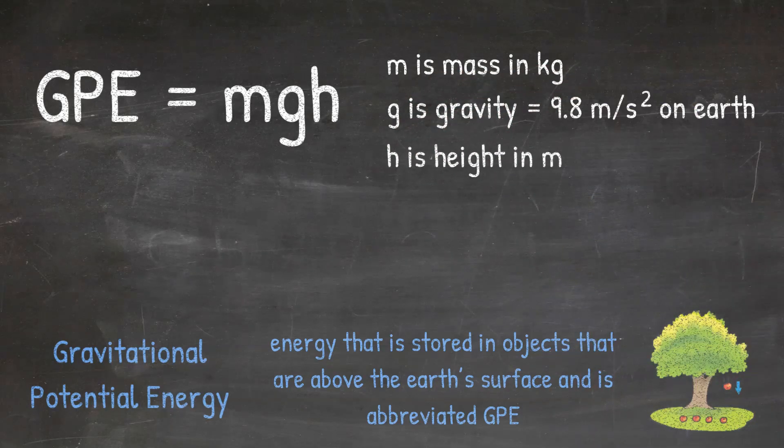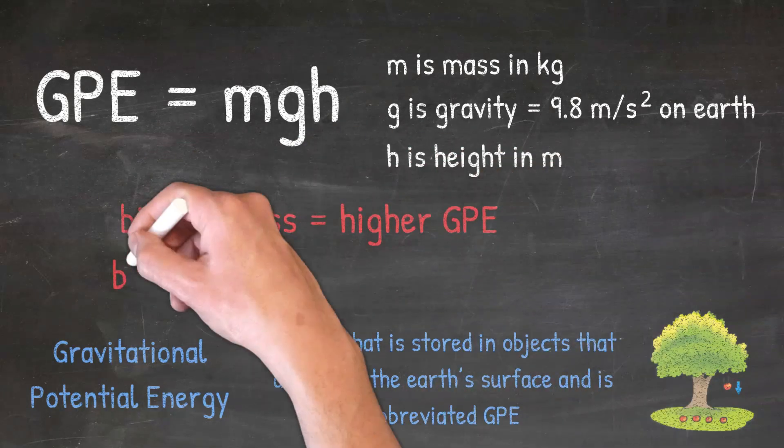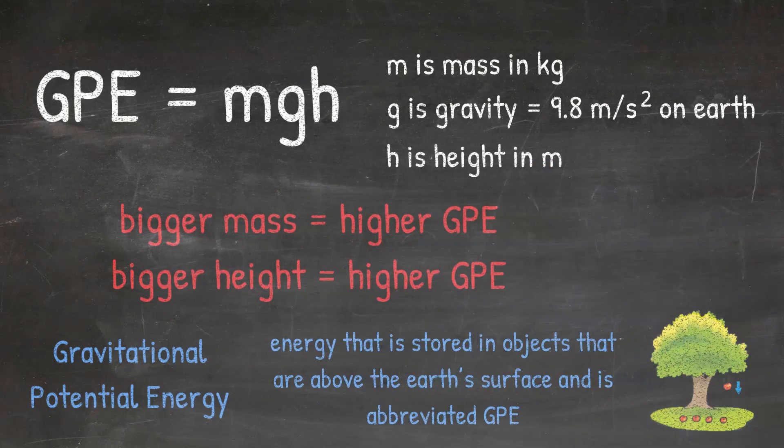We will look at how to use this formula to solve for GPE in a later video. We can see here that GPE is really only affected by the mass and the height, since gravity on Earth is always 9.8. So from this formula, we can see that objects with a bigger mass will have more GPE, and objects that are higher off the ground will also have more GPE.